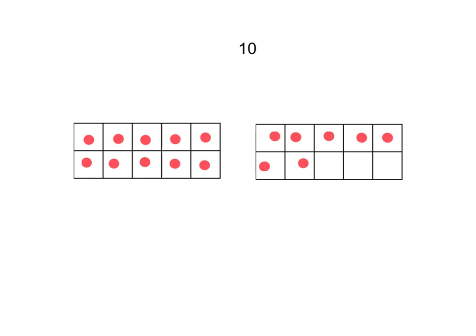Now let's get started with compensation. When you use compensation, you change the subtrahend to the nearest 10 and adjust the difference to make up for the change that you made. 10 is easier to take away than numbers like 7, 8, or 9. Compensation is very effective when you need to regroup, like in the example you're about to see.